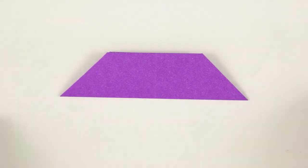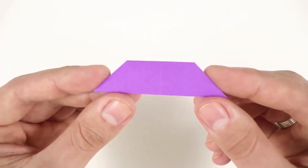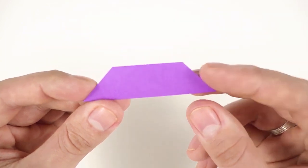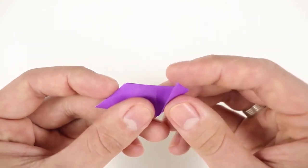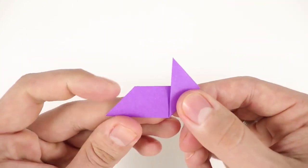Now, pay attention to the next step. We need to fold the right side up, bringing half of the bottom to the middle. Just like this.